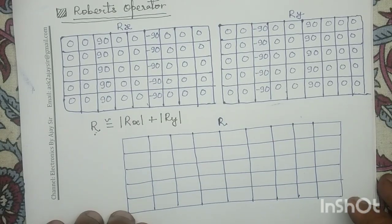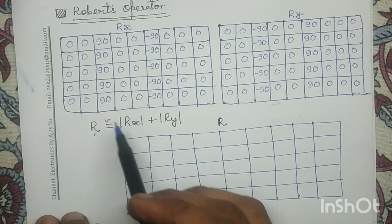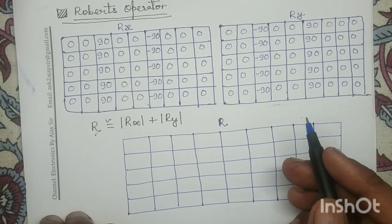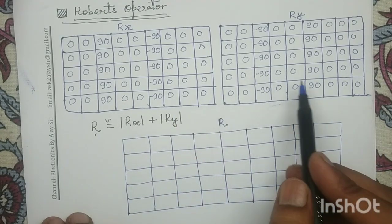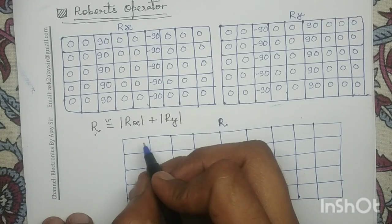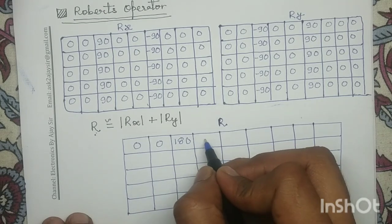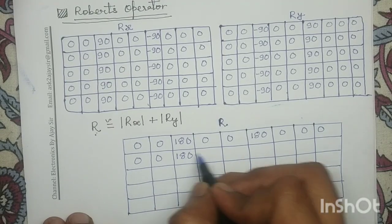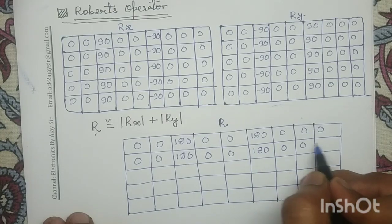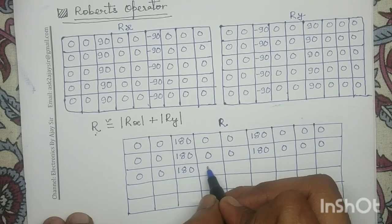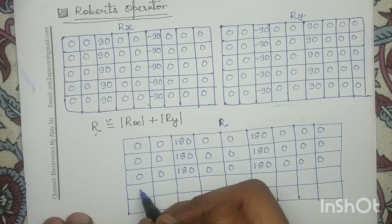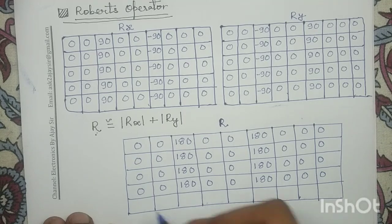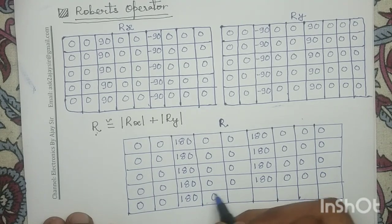This is the magnitude of the Roberts operator R. We first perform the modulus operation on Rx and Ry, then perform simple addition. By taking |Rx| + |Ry| and performing the arithmetic addition, you get responses of 0, 0, 180 at the edge locations and 0 at the non-edge locations, forming the magnitude matrix.